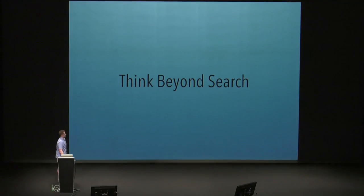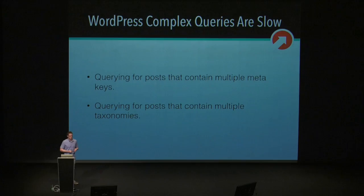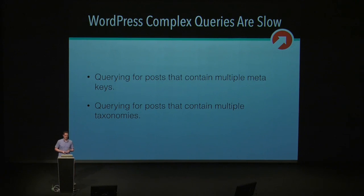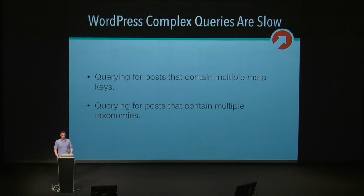I know this talk is filled with the word search, but I want everyone to think beyond search when they're listening to me and coming out of this talk. WordPress complex queries in general can be very slow. And by complex queries, I'm talking about multidimensional meta queries and multidimensional taxonomy queries. And we're going to get into a little bit of what exactly that means as the talk progresses.